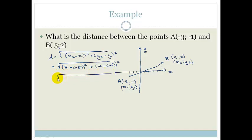Why? Because what happens to this? This becomes 5 minus times the minus is a plus 3 squared. So if you'd written 5 minus 3, you'd have just got 2, compared to 5 plus 3, which is going to be 8, plus 2 minus minus times the minus is a plus 1, all squared.